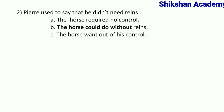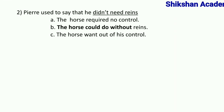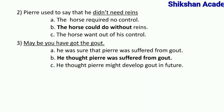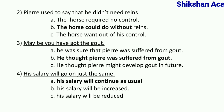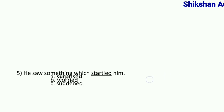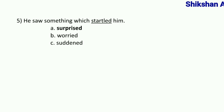Third question: maybe you have got the gout — इस पूरे word पर underline किया गया है — इसका answer आएगा: he thought pairs was suffering from gout। Question number four: his salary will go on just the same — इसका underline का answer आएगा: his salary will continue as usual। Question number five: he says something which startled him — startled का meaning होता है surprised। इस प्रकार question number four के पाँचों questions complete होते हैं।